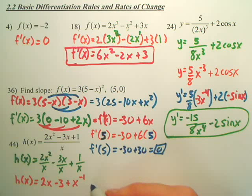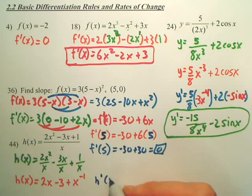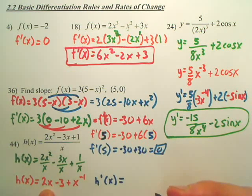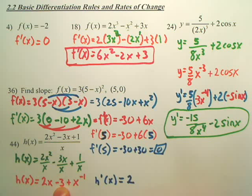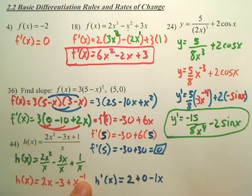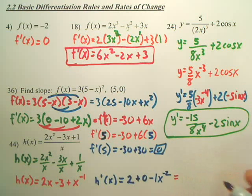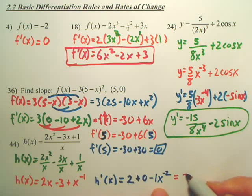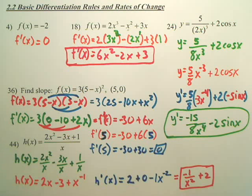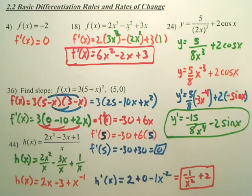Now derive: derivative of 2x is 2, derivative of negative 3 is 0, and for x to the negative first bring the negative 1 out front and subtract 1 to get x to the negative 2. Converting back to positive powers, the final derivative is negative 1 over x² plus 2.